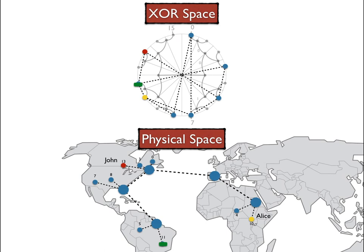When that machine relays the message to Alice in XOR space, although Alice is a single hop away, the sending of the message might actually span multiple continents. So the message will have to traverse multiple hops on the physical internet before reaching there. We see in that example that sending messages along the shortest path in XOR space does not mean that we're following the shortest path in physical space.